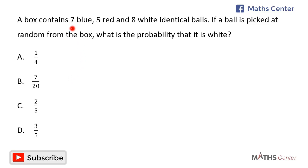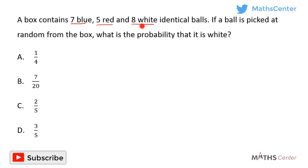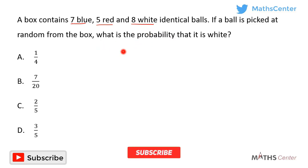The box contains seven blue balls, five red balls and eight white balls. The question wants us to find the probability that a ball selected at random from the box is white. The probability is equal to the number of white balls in the box divided by the total number of balls in the box.